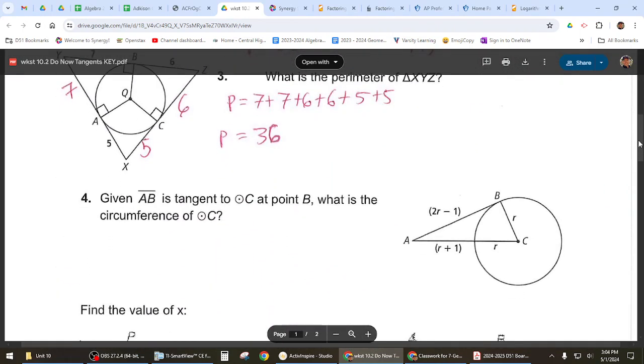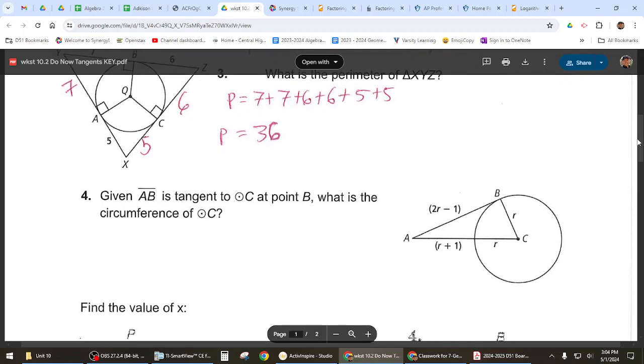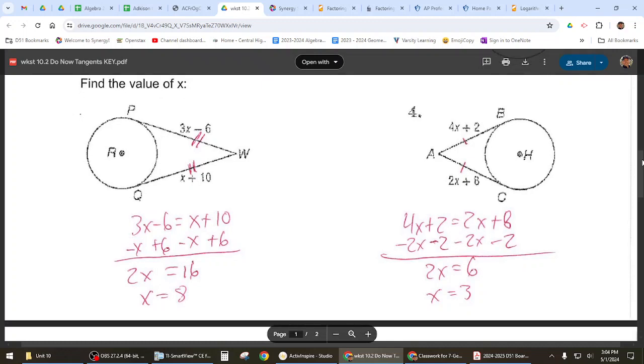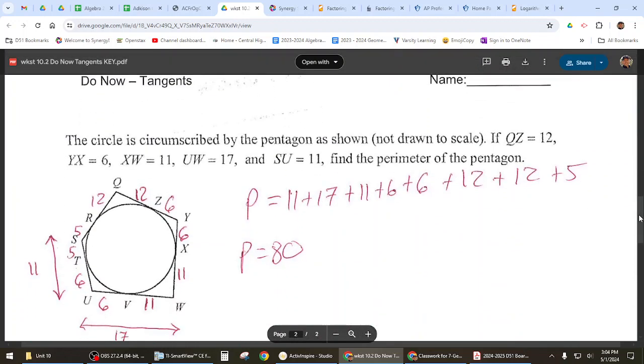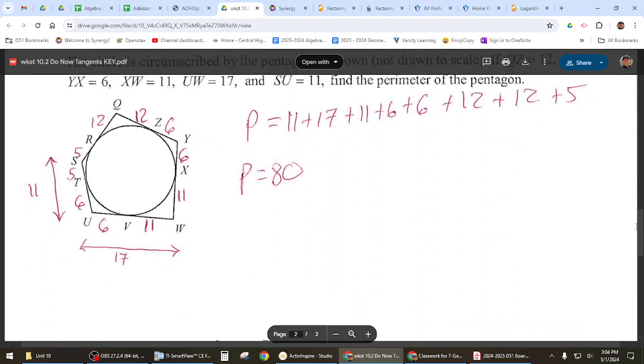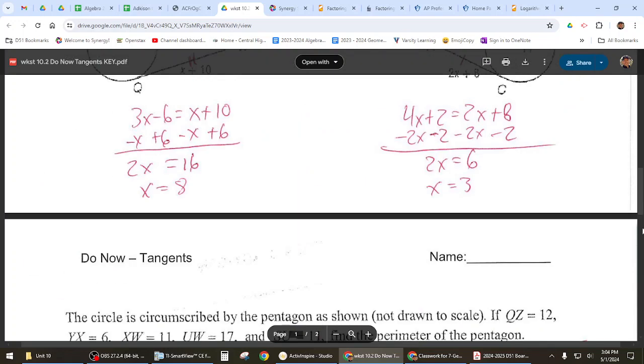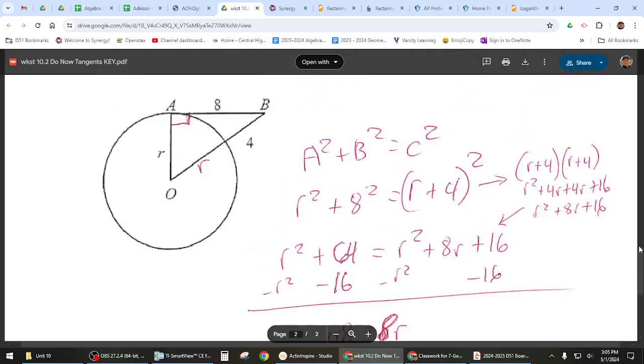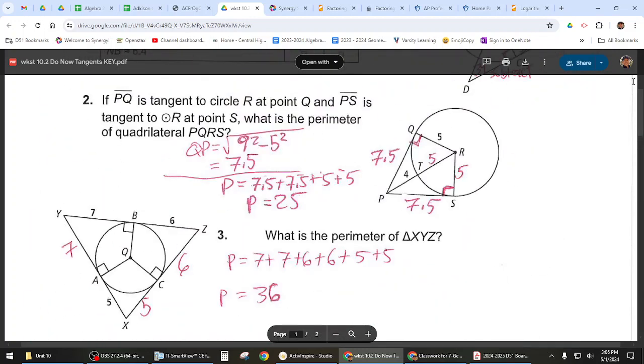All right, let's go ahead and check the answers for the rest of these. Number 3 should have got 36 for the perimeter. And then this one, I guess we'll call it 5, is 8, and then 3 for those two. On the back, perimeter is 80. Did you like that one? It was a lot of copy-paste. And then we just did the last one, so 6.